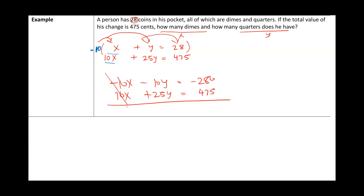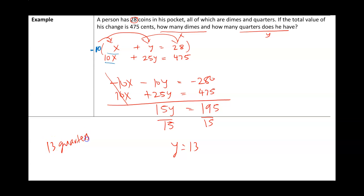Adding down, the negative 10x and positive 10x cancel out. Negative 10y plus 25y is positive 15y, and 475 minus 280 is 195. Dividing both sides by 15 gives y equals 13, meaning there are 13 quarters. Going back to the first equation, x plus 13 equals 28, so subtracting 13 from both sides gives x equals 15. So we have 13 quarters and 15 dimes.